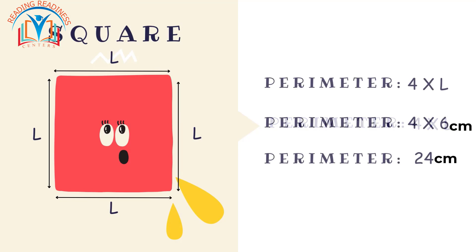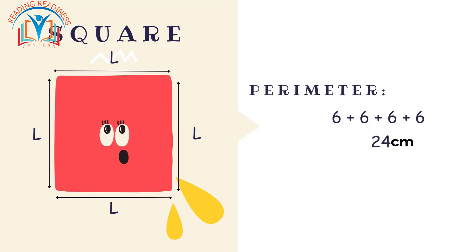Let's calculate the perimeter of a square with a side length of six centimeters. Perimeter equals four times the side length: 4 × 6 cm = 24 centimeters. Alternatively, 6 cm + 6 cm + 6 cm + 6 cm = 24 centimeters. Therefore, the perimeter of the square is 24 centimeters.